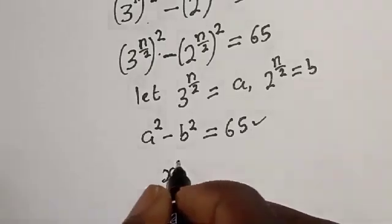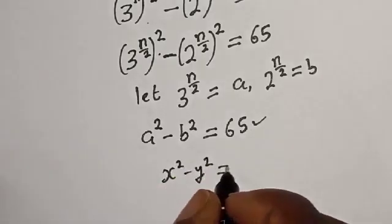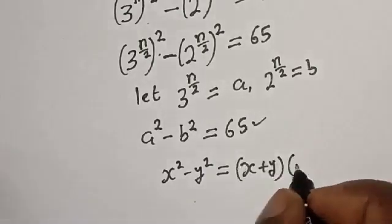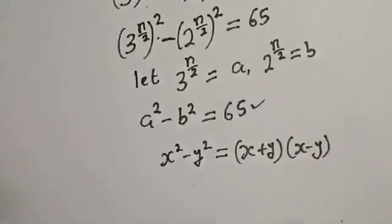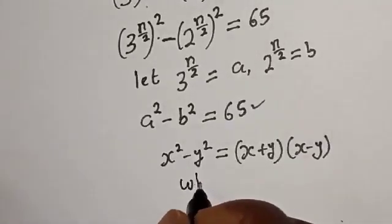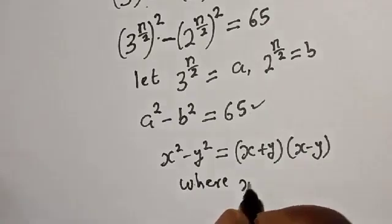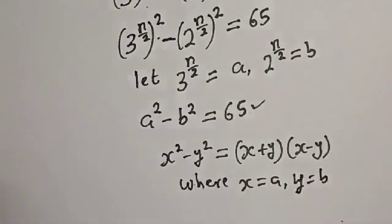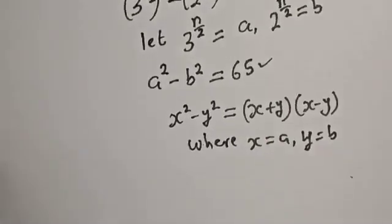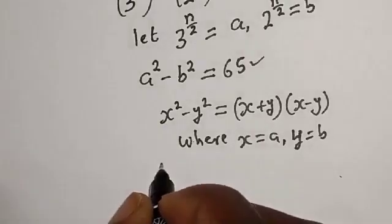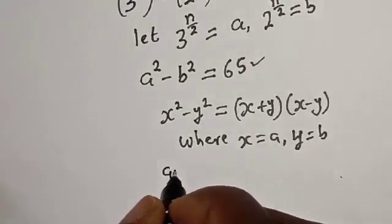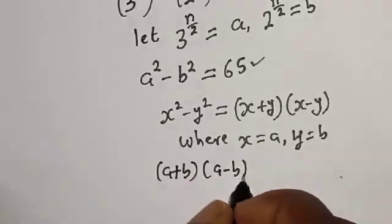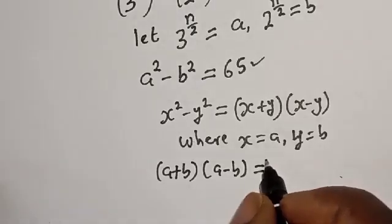Take note of the rule that if you have s squared minus y squared, this is equal to (s + y) multiplied by (s − y). Applying this with s equal to a and y equal to b, we have (a + b) multiplied by (a − b) is equal to 65.